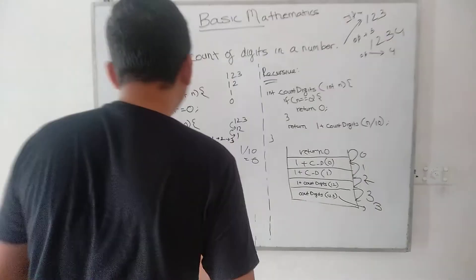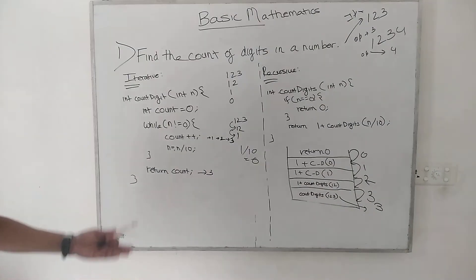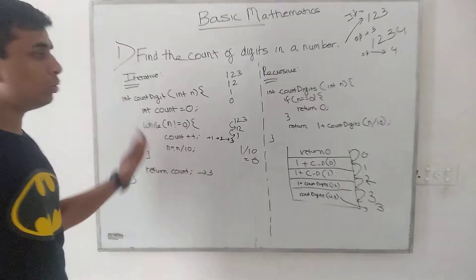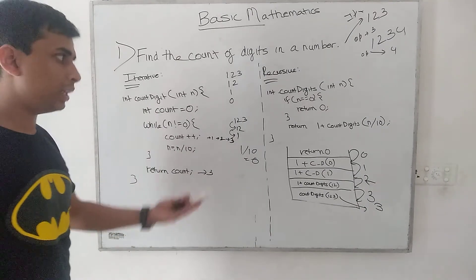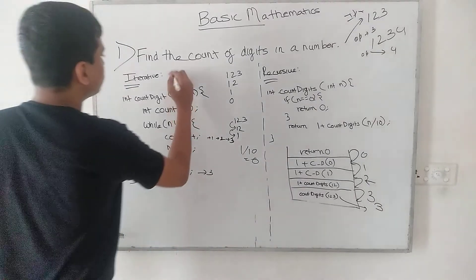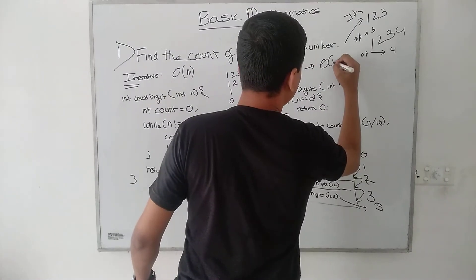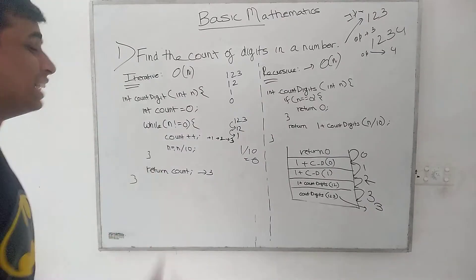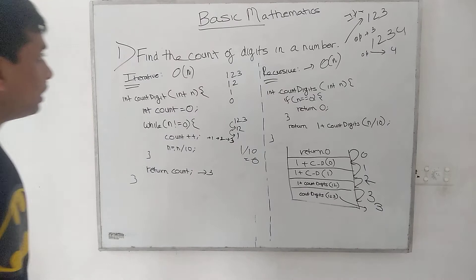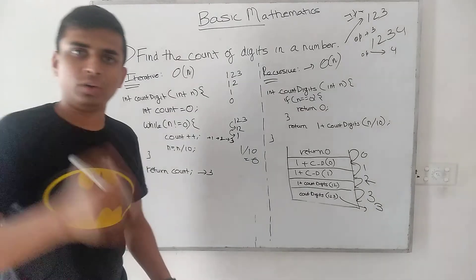Both the iterative and recursive approaches take O(n) time — that is, the time complexity is a function of n. So is there any better way in which we can find out the number of digits in a number? Let's see whether we can find out another way.